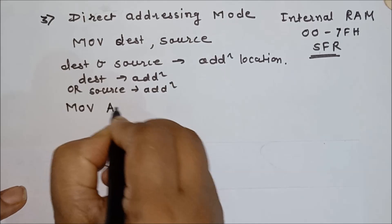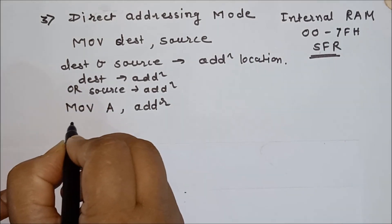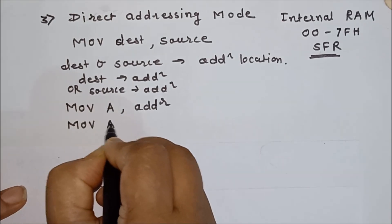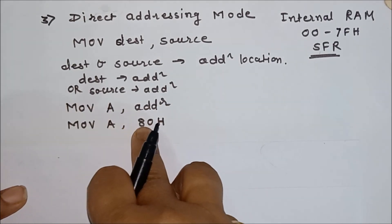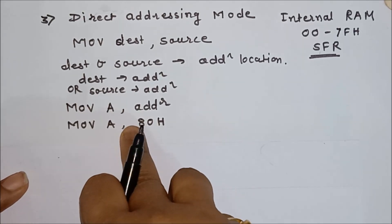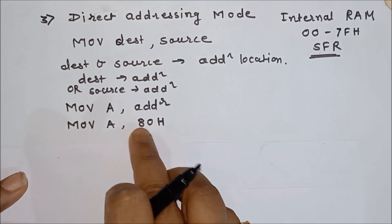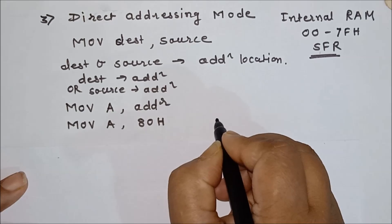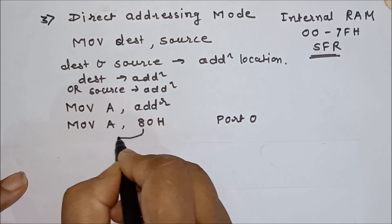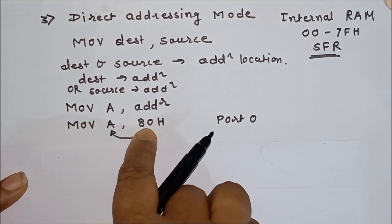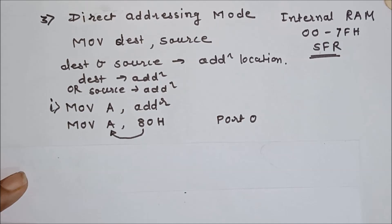For example, suppose I write: MOV A, A0H. Since no hash sign is used here, this indicates A0H is an address of memory, not data. If a hash is written then it is data — this is the differentiation between address and immediate data. A0H is the address of Port 0. So what this instruction does is move the contents of Port 0 into the accumulator.